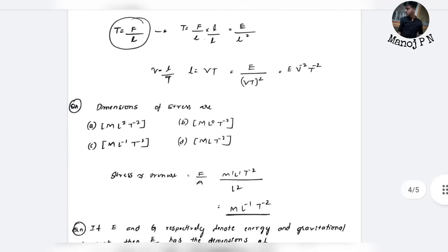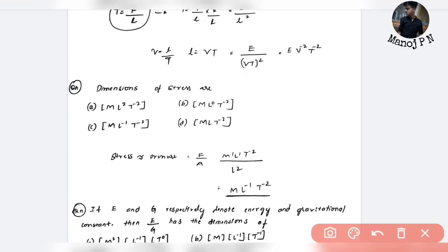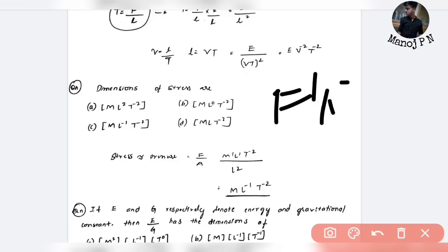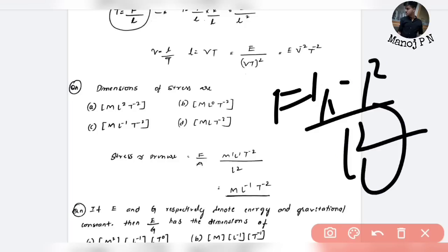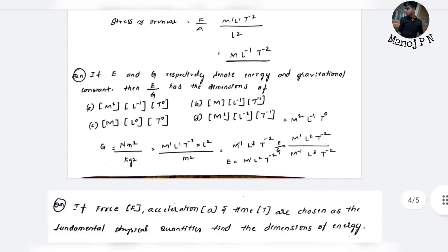Next: dimensions of stress. Stress is force applied per unit area — same category as pressure. Force has dimensions M¹L¹T⁻², divided by area L², giving M¹L⁻¹T⁻². That is the answer — simple.